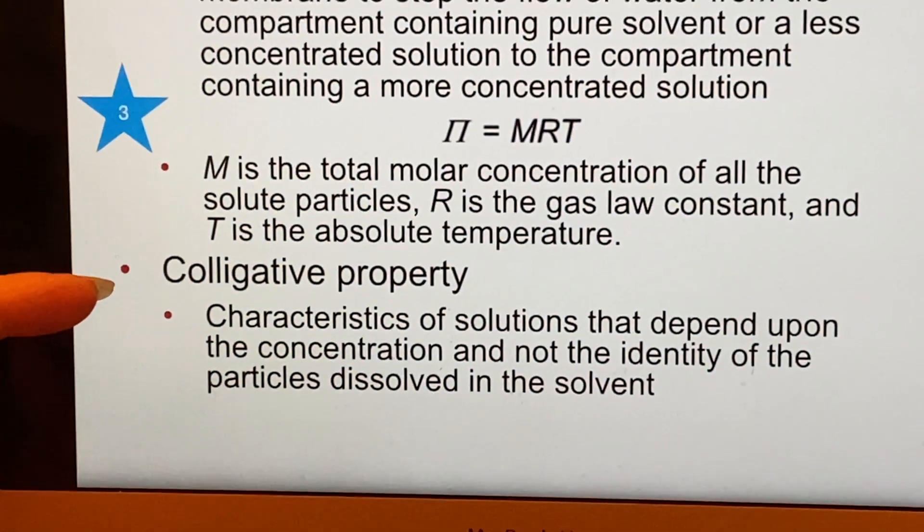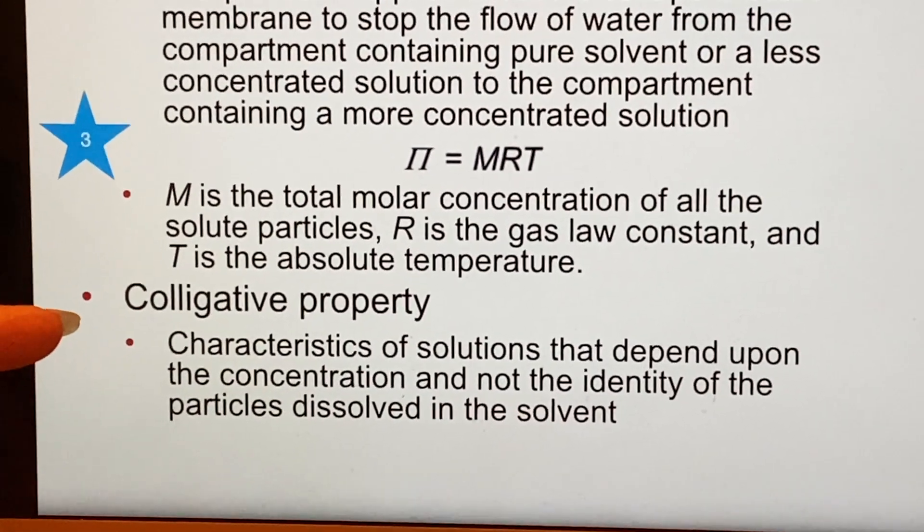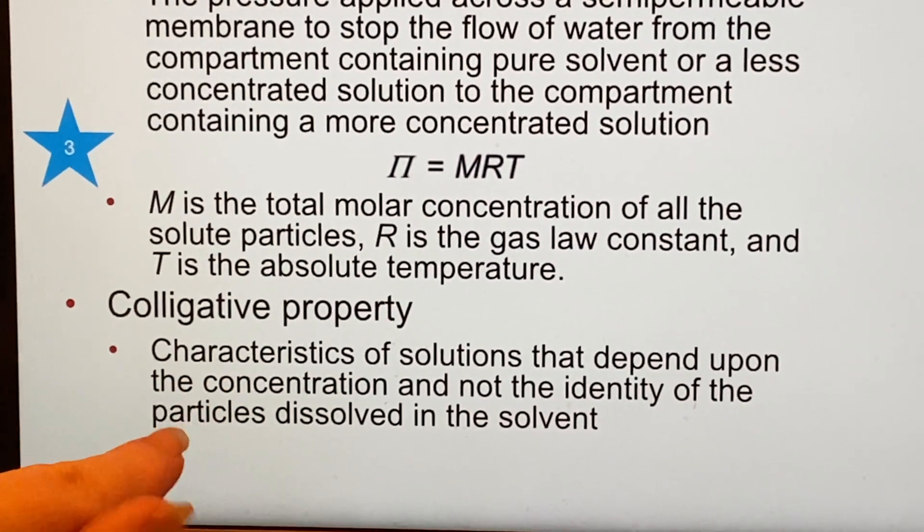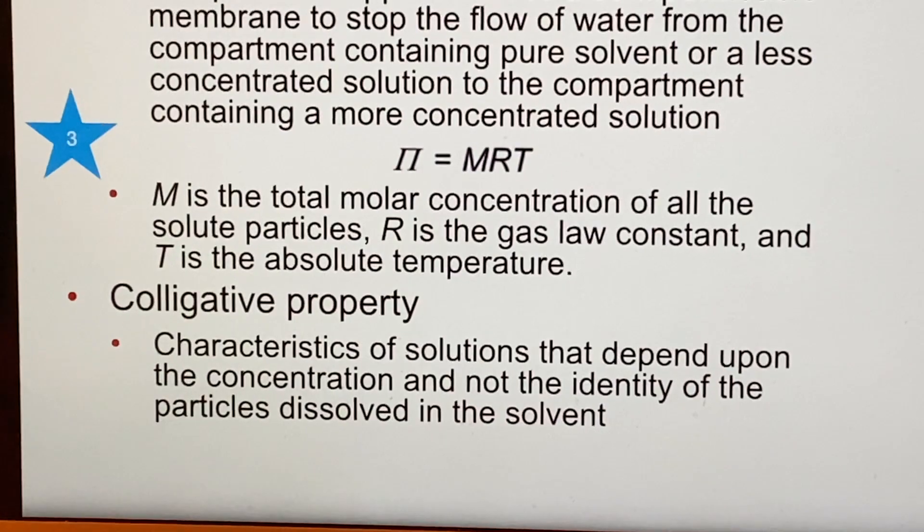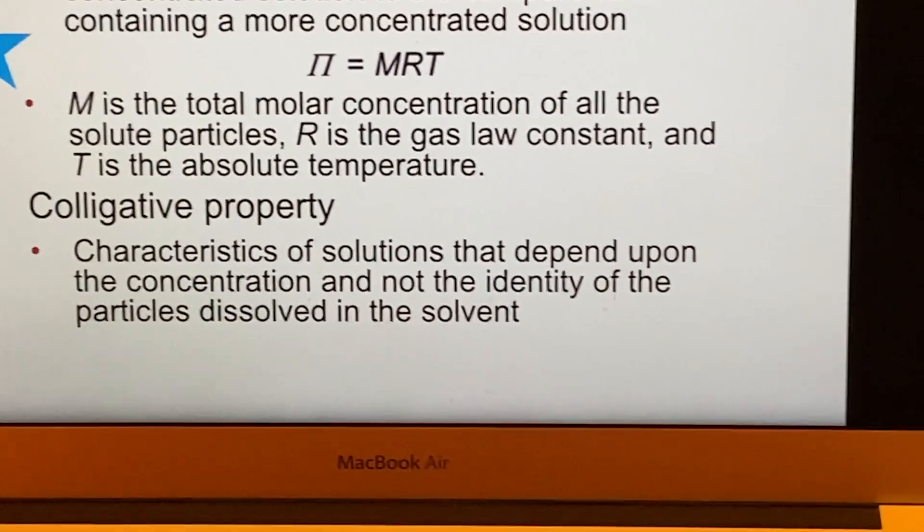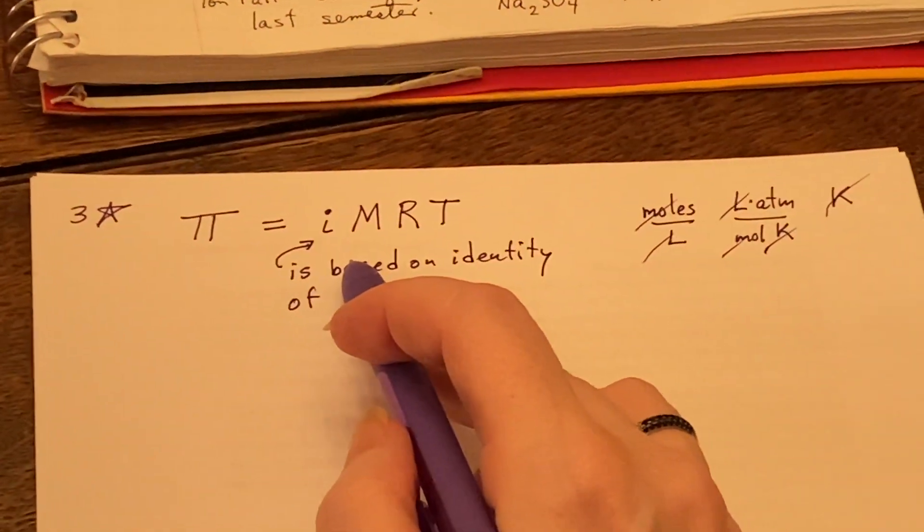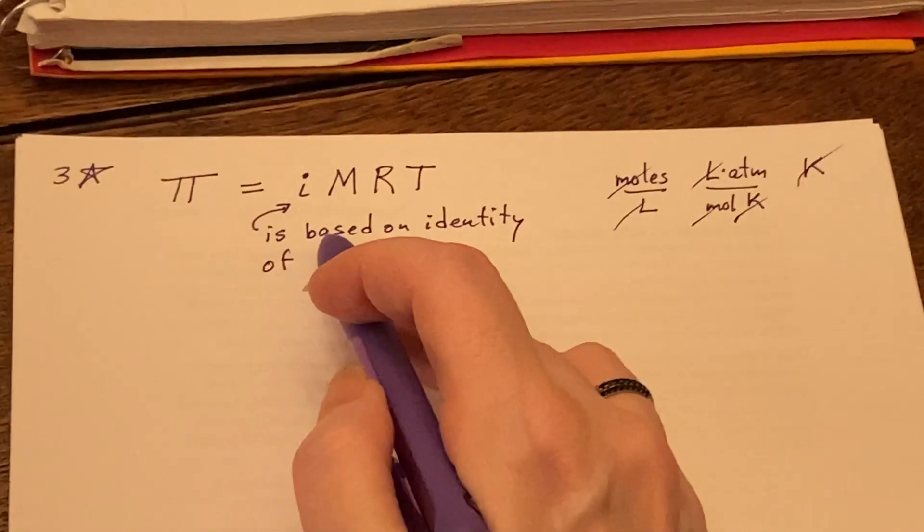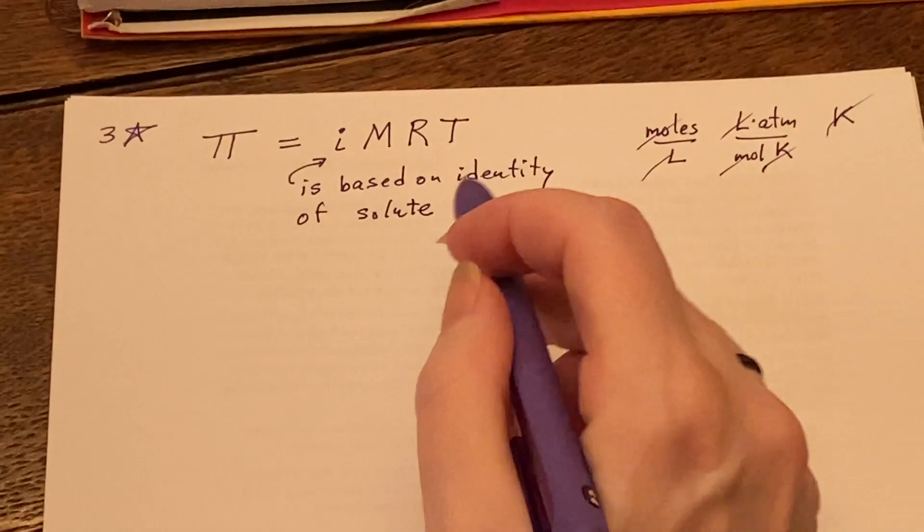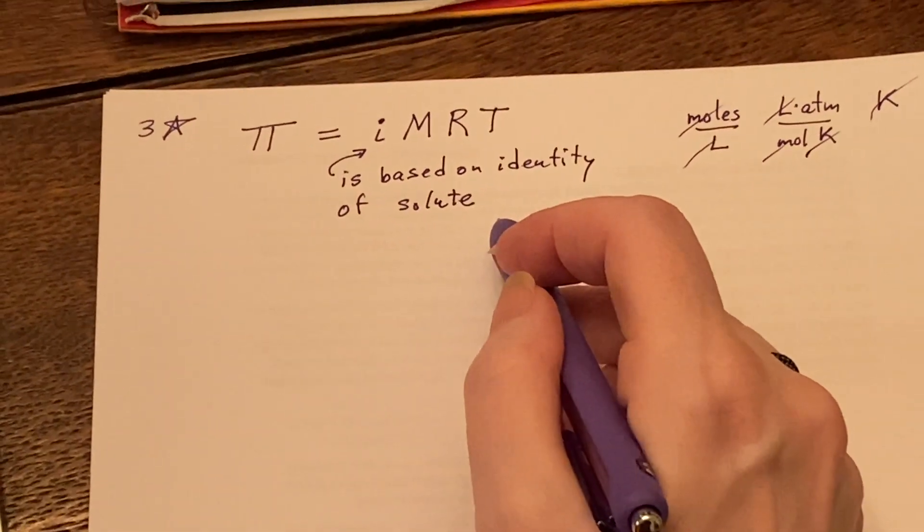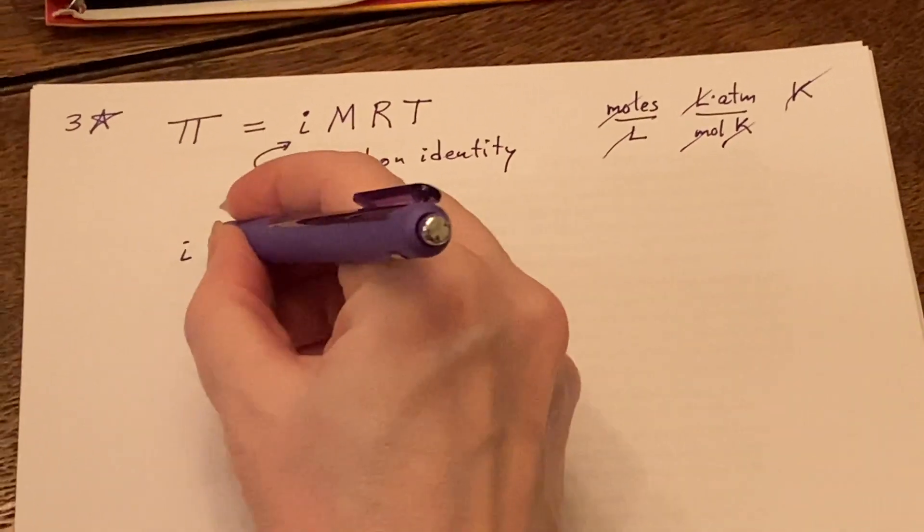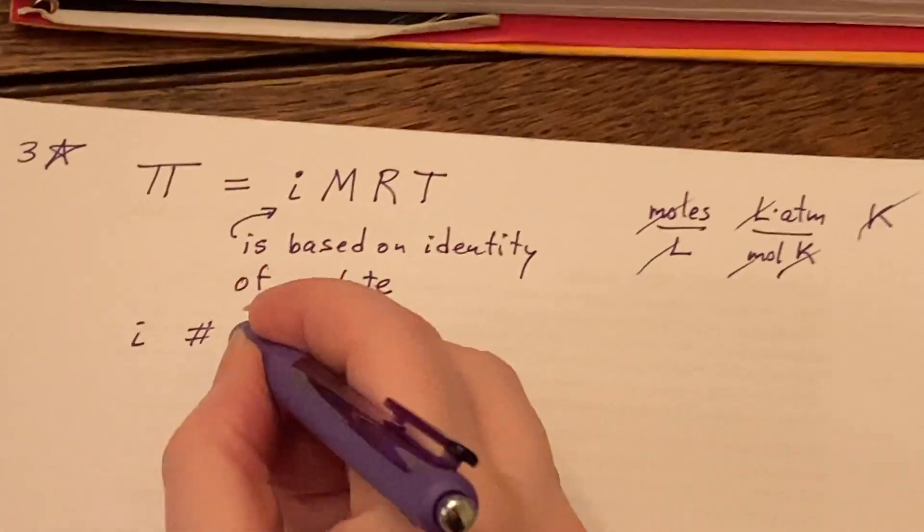And this is another one of the colligative properties. What's a colligative property? A characteristic that depends upon the concentration, not the identity of the particles. When I say molarity, I'm just talking about the molarity of the solute—I don't care what the solute was. It depends on the concentration and not the identity of the particles dissolved in the solvent.